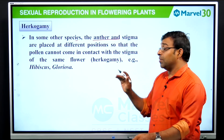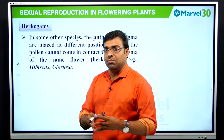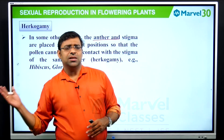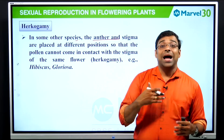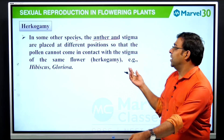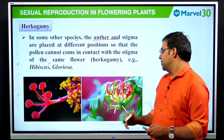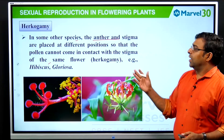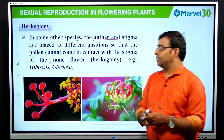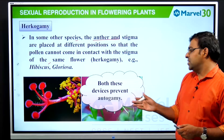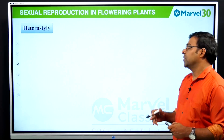Hercogamy: in some species, the anther and the stigma are placed at different positions so that pollen cannot come in contact with the stigma of the same flower — they are morphologically or anatomically different in placement. Example: Hibiscus. Both dichogamy and hercogamy prevent autogamy, which means self-pollination.